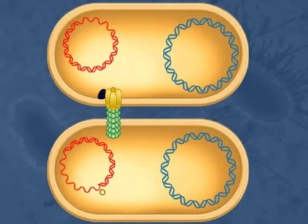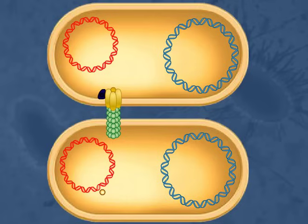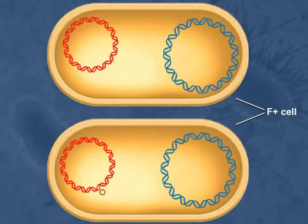In the donor cell, the F-factor DNA was also replicated to become double-stranded. This actually occurred as the T-DNA was being transferred to the recipient cell. In the end, both cells wind up with a complete double-stranded copy of the F-factor. Their connection through the pilus is released, and each is now an F-plus cell that can go on to conjugate with other cells.